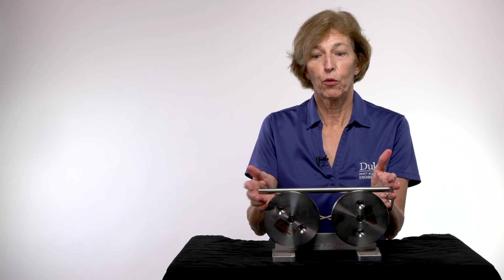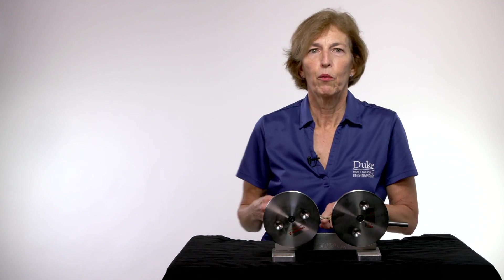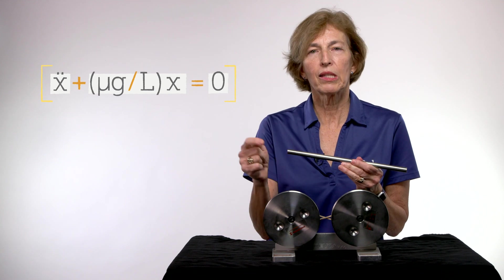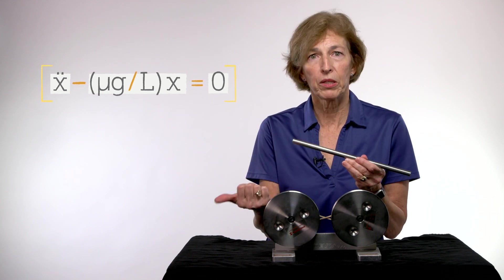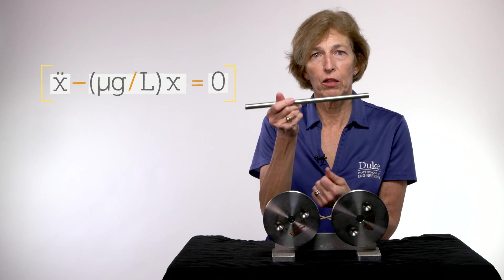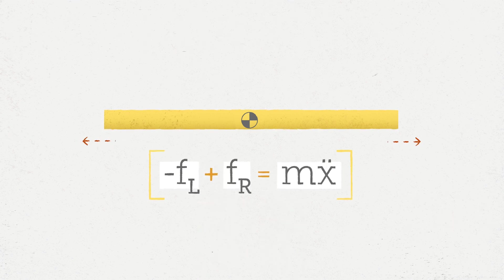What if we did it the other way and we looked at this motion? Well, in that case, what happens without going through all of the math all over again, the sign of friction flips because now the friction is applying the forces to the bar in the opposite direction. So instead of FL minus FR, we now have minus FL plus FR equals MX double dot.